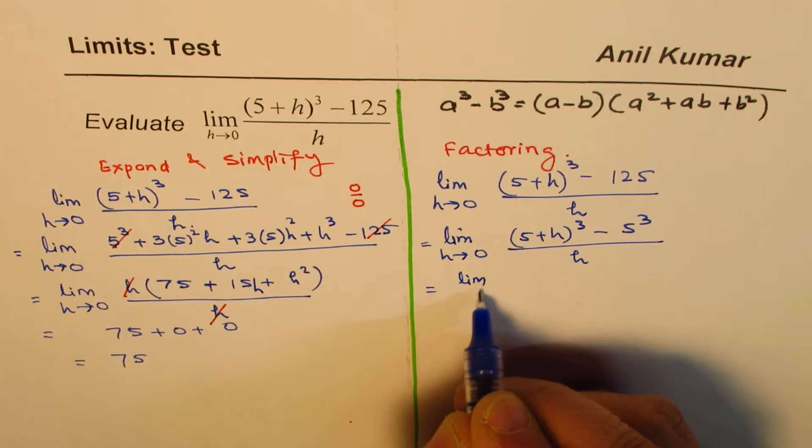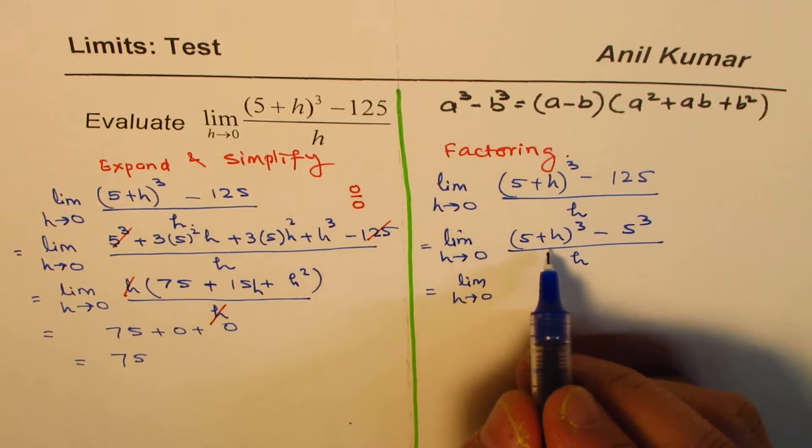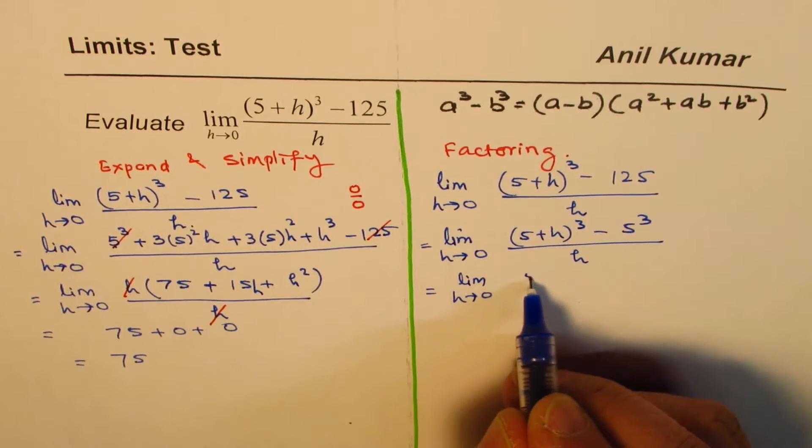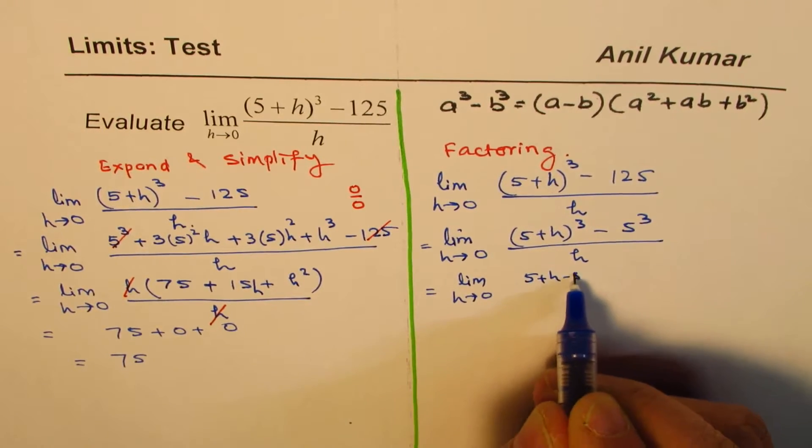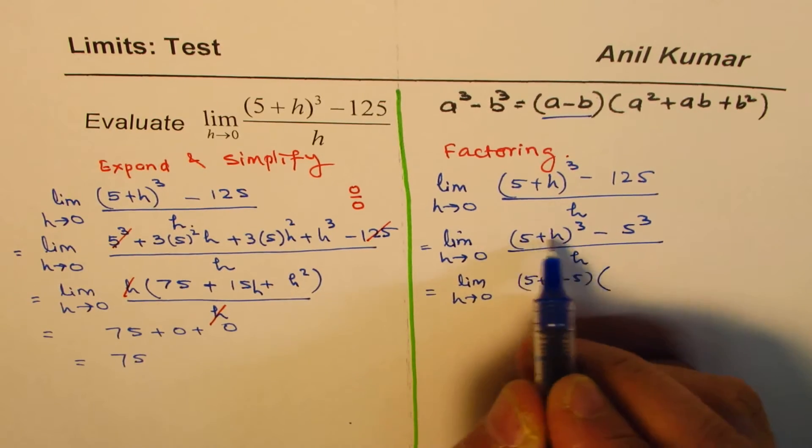Now, we'll factor. It's clear, right? So, it gives us a cube, a minus b. So, a minus b, which is 5 plus h minus 5. This is a minus b, the first term, right? The next term is square of this.